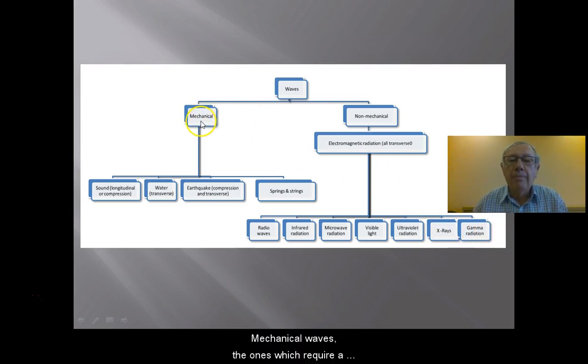Our mechanical waves, the ones which require a medium, a substance through which to travel. We can have those as traveling in springs or strings. Earthquake waves would be another example of a mechanical wave. Water when it carries waves would be mechanical, and so also would sound. So those are our ways in which we can classify waves.